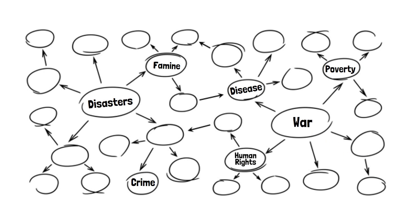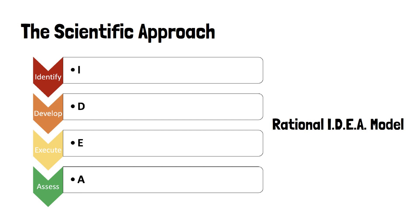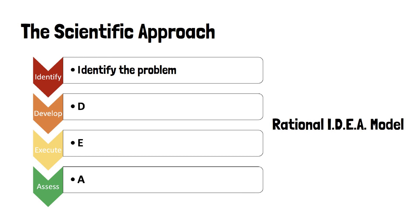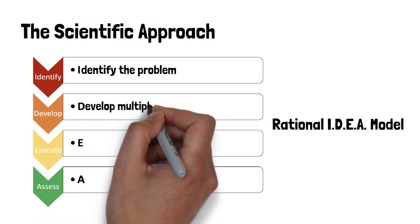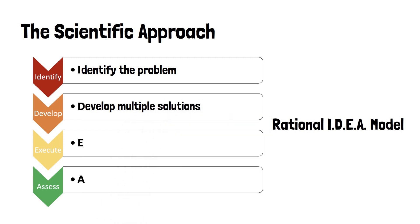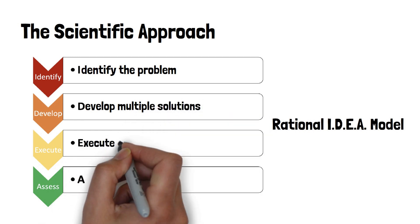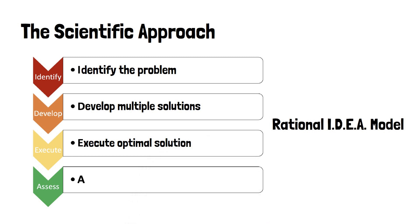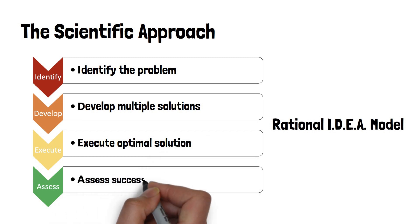In responding to wicked problems, one of the main criticisms is the use of a scientific or rational approach designed for solving tame problems. For example, the four-phase IDEA model starts by clearly identifying the problem and gathering all of the information. Only then do you move to develop multiple solutions to compare and contrast. The third step is to execute the optimal solution, and finally, in the last step, you assess how well the solution actually worked.